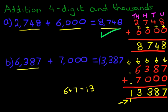6,387 plus 7,000 is 13,387. That is correct.